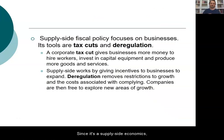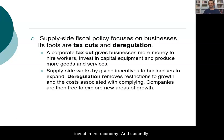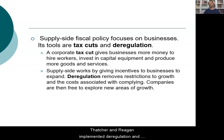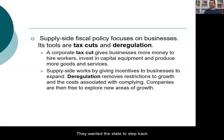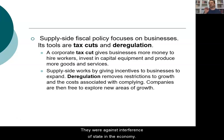Since this is supply-side economics, private initiatives — not the state — are expected to invest in the economy. Secondly, Thatcher and Reagan implemented deregulation and privatization policies. They wanted the state to step back from the economy and were against interference of the state in the economy. This shift also affected public administration theory significantly.